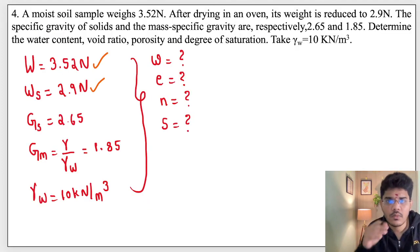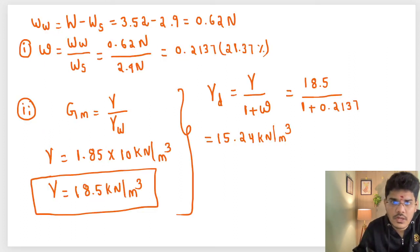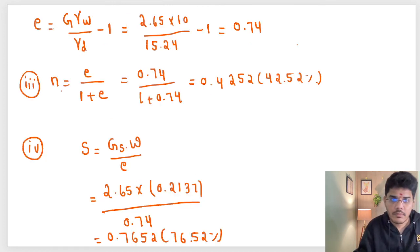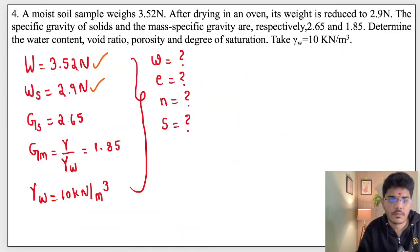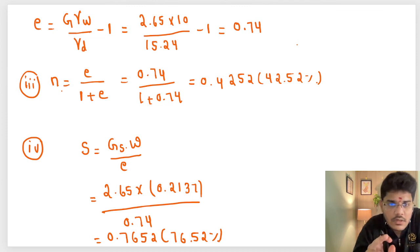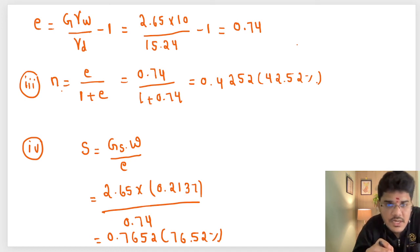So we have calculated water content w equals 0.2137, gamma-d equals 15.24, gamma equals 18.5, porosity n equals 0.4253, and degree of saturation S equals 76.52 percent. This is the third problem. In the next video we will solve one more practice question. Thanks for watching — if you find the content useful, please like and subscribe to my channel.